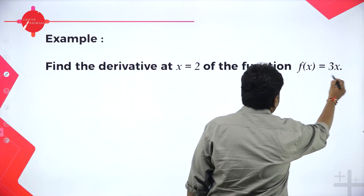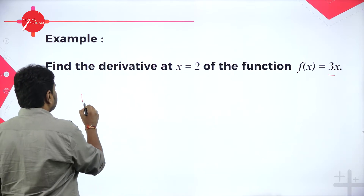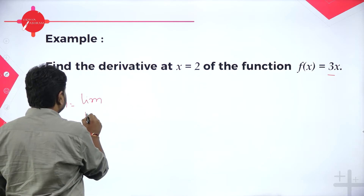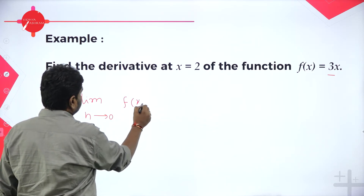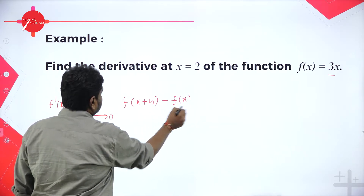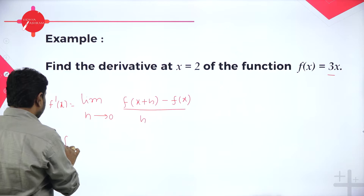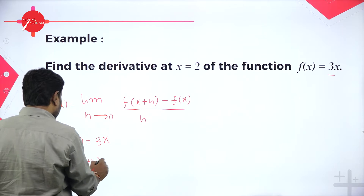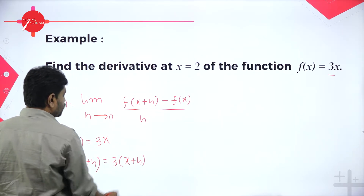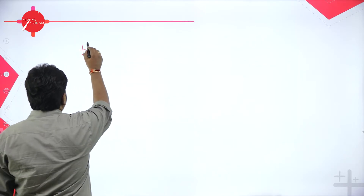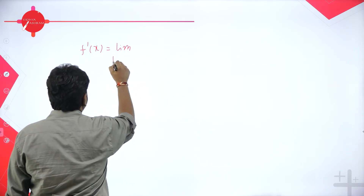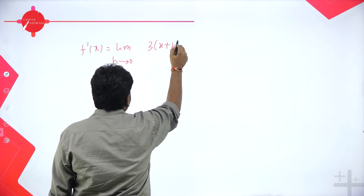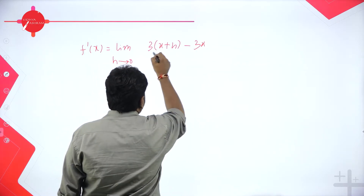Find the derivative at x=2 where f(x) = 3x. By the method of first principles, f'(x) equals the limit as h tends to 0 of [f(x+h) minus f(x)] divided by h. Since f(x) = 3x, f(x+h) becomes 3(x+h). Substituting, f'(x) equals the limit as h tends to 0 of [3(x+h) minus 3x] divided by h.